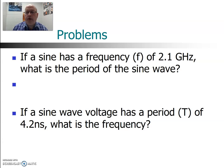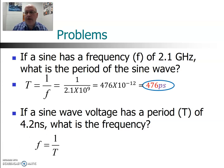Okay, at this point, hopefully you've worked out these two problems. So the first one, the period is 1 over the frequency. So 1 over 2.1 gig gives us 476 picoseconds. And for the next one, 4.2 nanoseconds gives us a frequency of 238 megahertz.